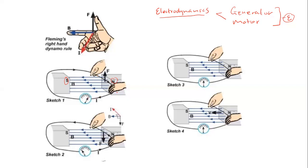This concept is called electromagnetic induction, and it was introduced by Michael Faraday — one of our great scientists we learned about in Grade 11. These sketches show different motions of a current-carrying conductor to determine whether a certain motion will produce current or not.